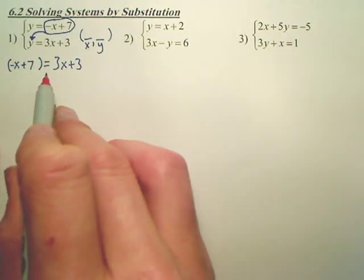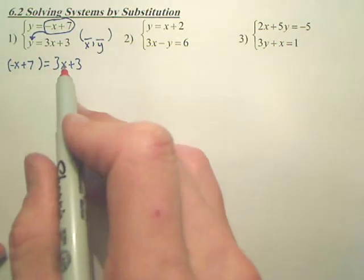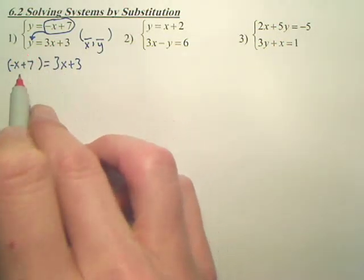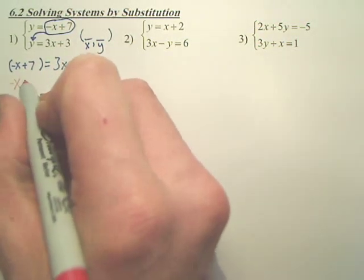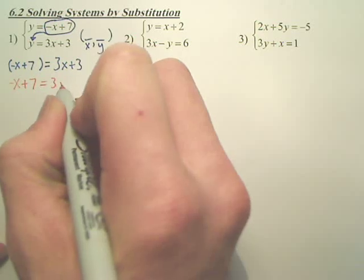Now, those parentheses really aren't necessary here, but I did it as more of a place value to put it in. Now, I want to solve this equation. So I have negative x plus 7 equals 3x plus 3.